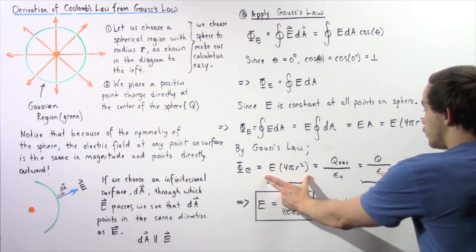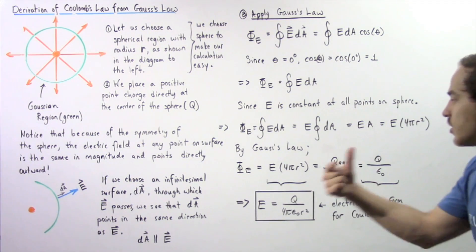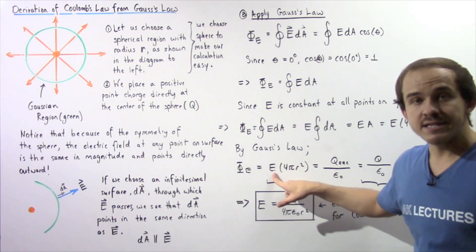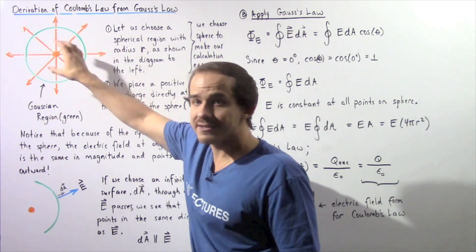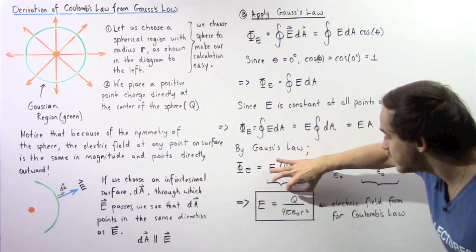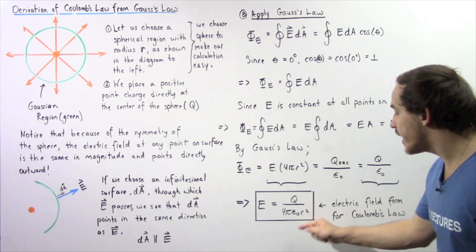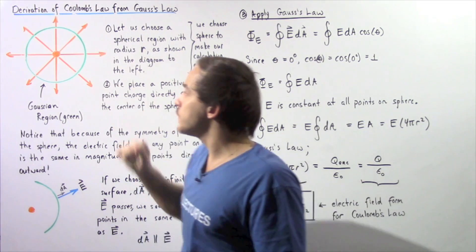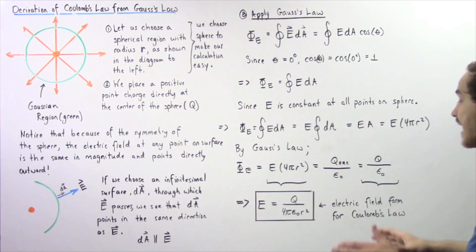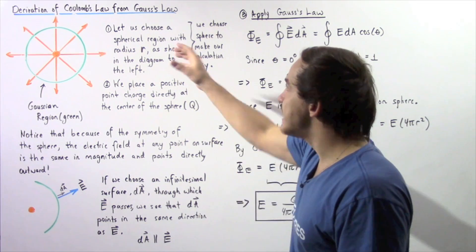Now this is equal to this, and if we take this quantity and bring it to the right side, we rearrange and solve for the electric field. We see that the electric field as a result of our point charge that is stationary is equal to the quantity of charge q divided by 4 pi epsilon naught multiplied by the radius squared. And the radius is the distance from our point charge to the surface of our sphere. In fact, this is our electric field form for Coulomb's law. We were able to derive Coulomb's law directly from Gauss's law.